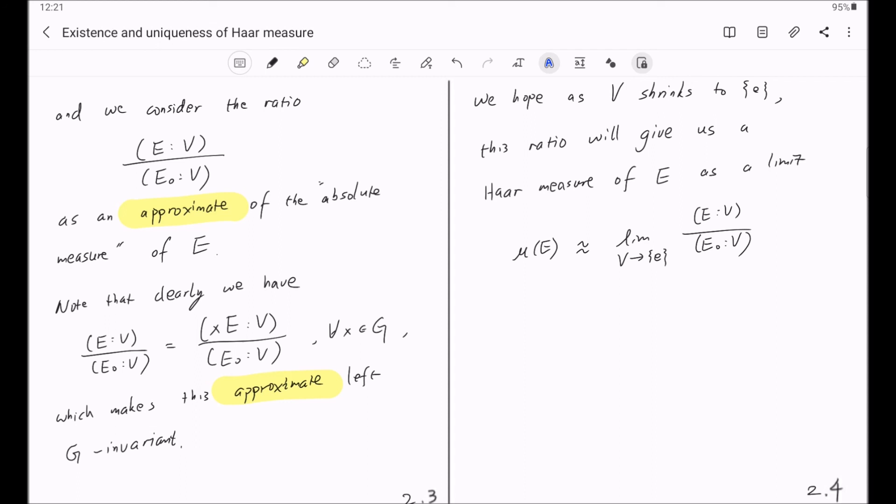And somewhere, he used the second countability of the topological group G. And later, the second countability was removed by Weil.